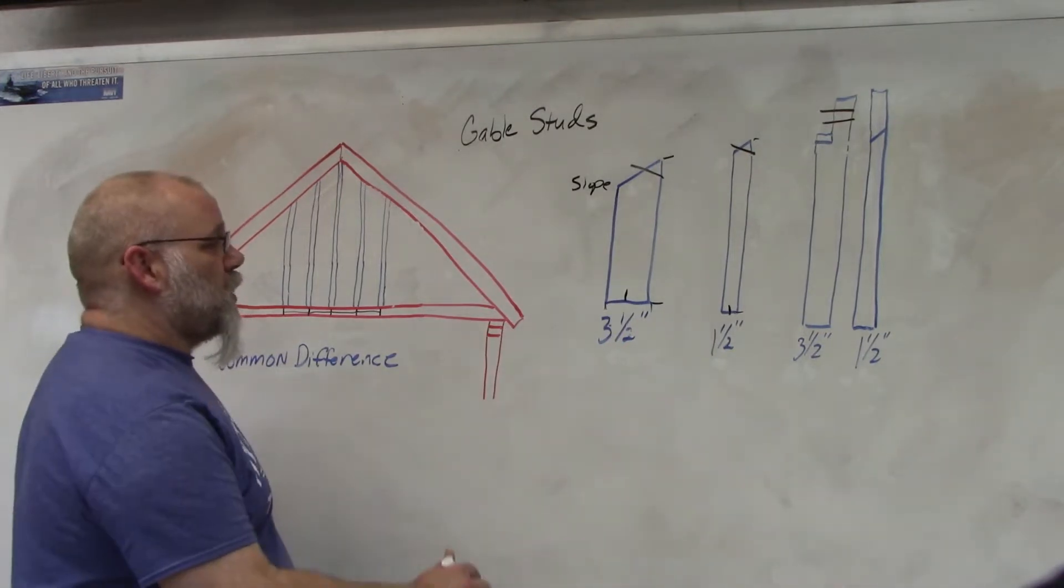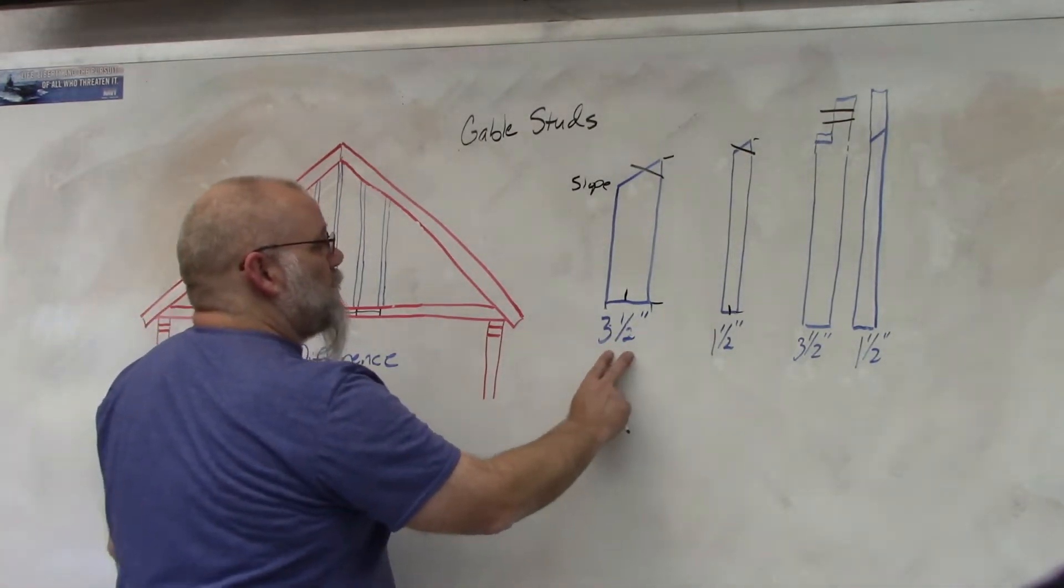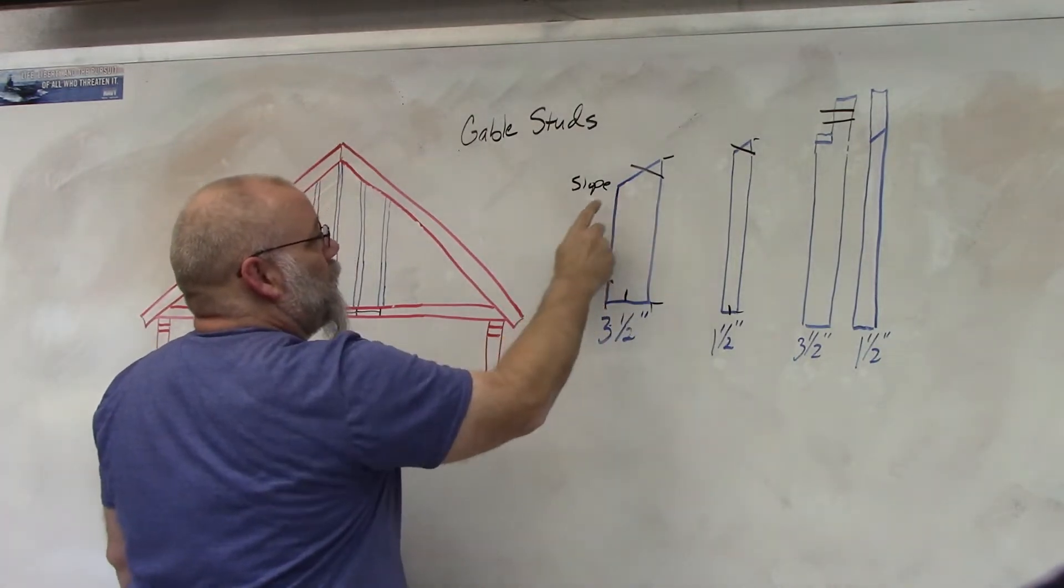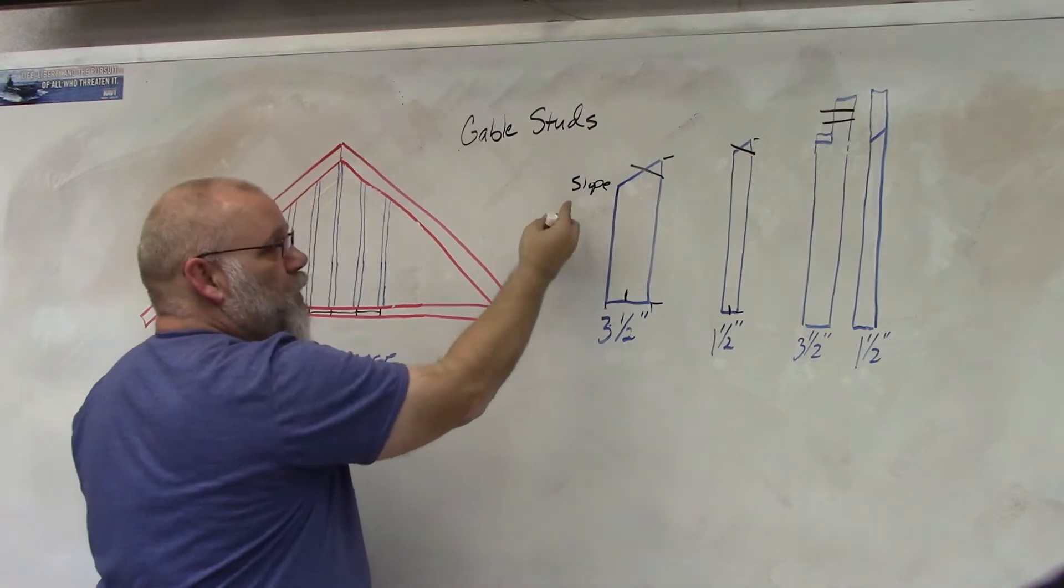There's three different methods for cutting the gable studs. The first one is the three and a half inch side. You cut a miter on there and you're going to use the slope of the roof.